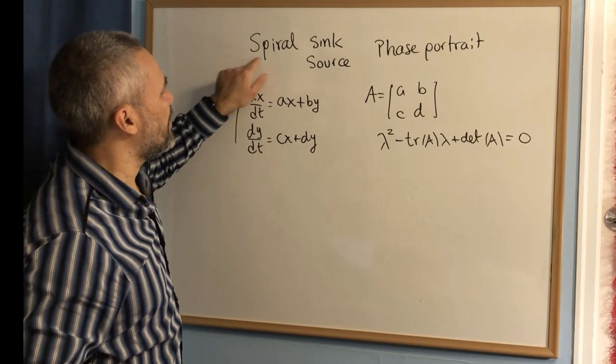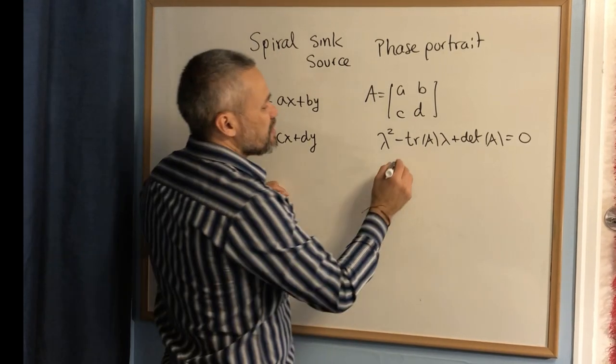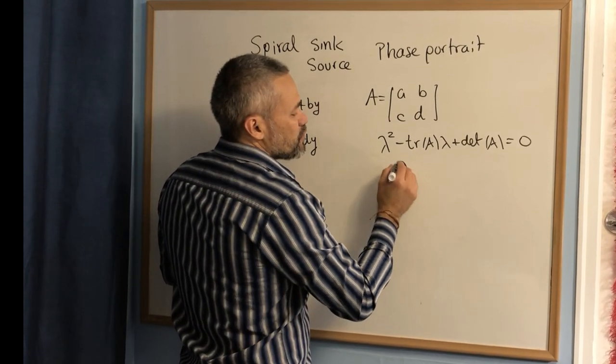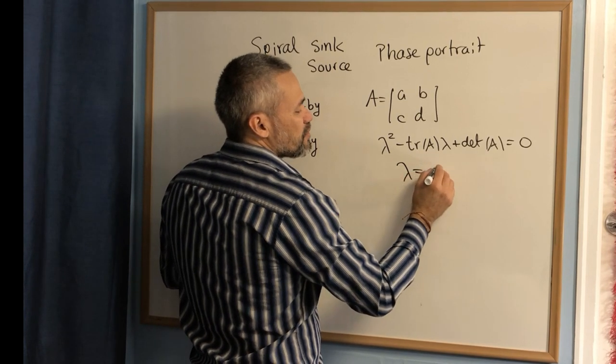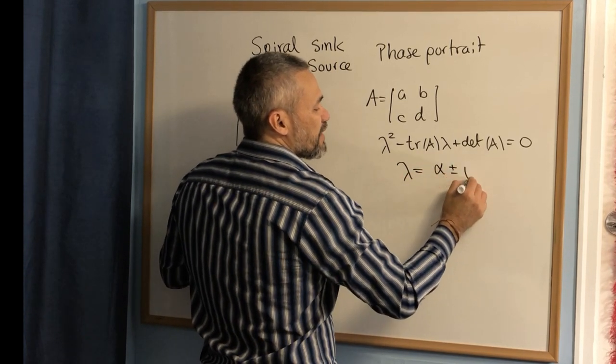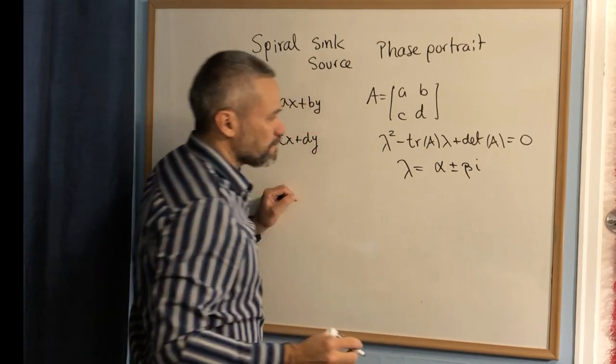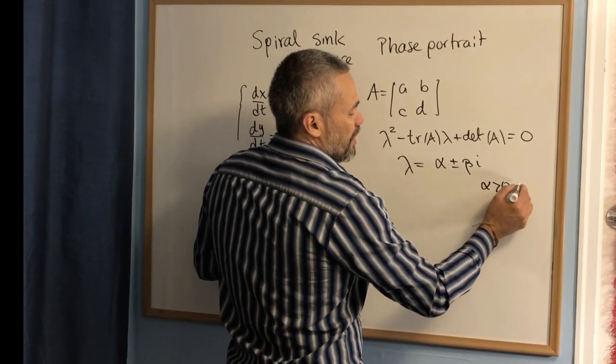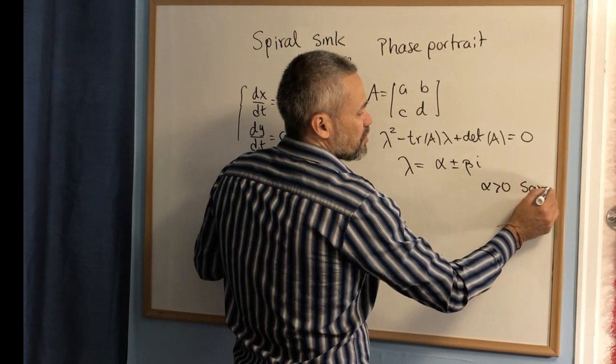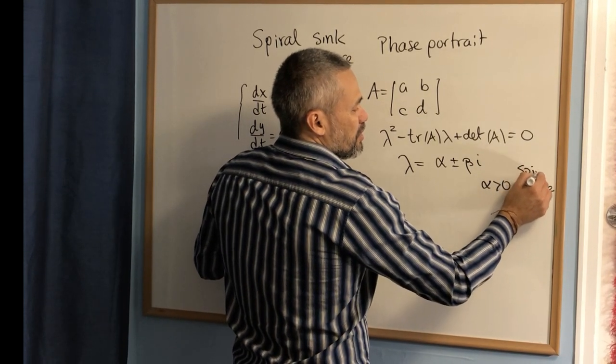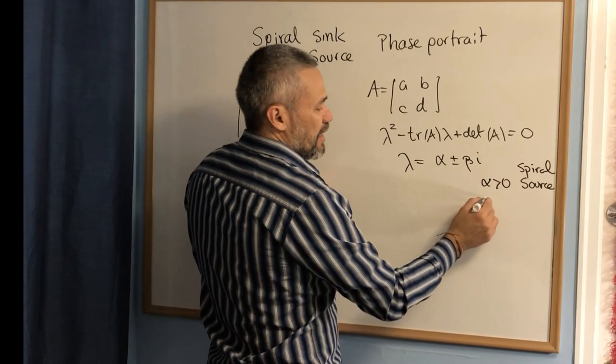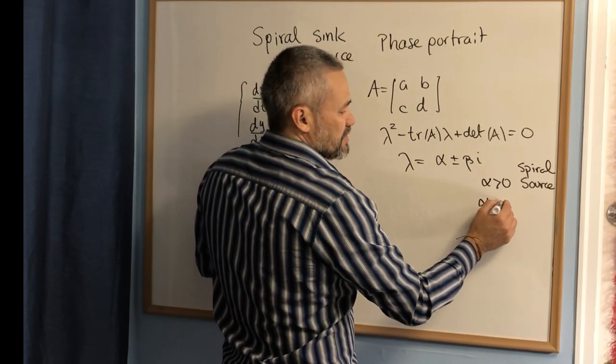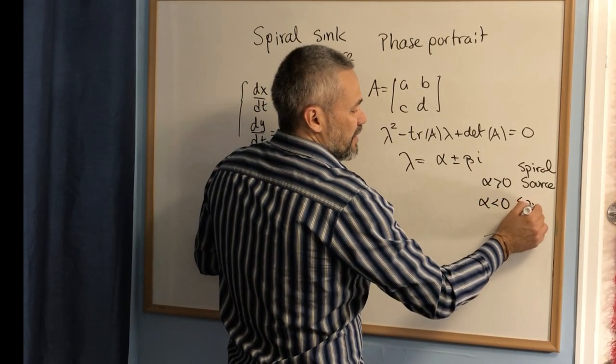And if we have a spiral, either source or sink, that means that the solution of this are lambda equal to alpha plus or minus beta i. When alpha is bigger than zero, we have a spiral source, and when alpha is smaller than zero, we have a spiral sink.